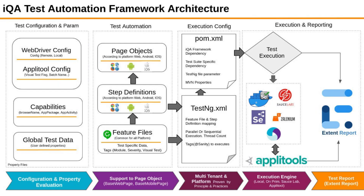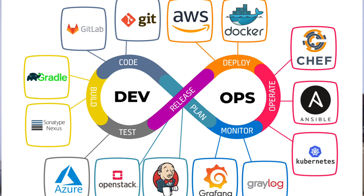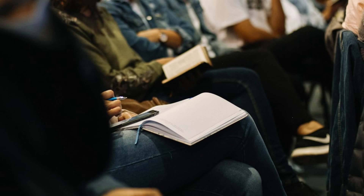Now let's talk about the key responsibilities of a Software Developer Engineer in Test. Starting with developing testing frameworks: build and maintain robust test automation frameworks that support integration, performance, and end-to-end testing. Next, be a code quality advocate: SDETs ensure code quality by implementing unit tests, integration tests, and continuous testing strategies. Next, DevOps integration: SDETs play a key role in integrating test automation into CI/CD pipelines, ensuring rapid and reliable delivery cycles. And last but not least, collaboration and mentorship: acting as a bridge between development and QA teams, SDETs mentor testers and developers in adopting best practices for testing and quality assurance.